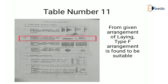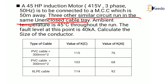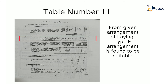First, we find the arrangement for the cable. From Table 11, we select a suitable arrangement of laying. Since three other similar circuits run in the same unenclosed cable tray, we match this with the table. There are arrangements A, B, C, D, E, F, G and so on. Based on our requirement, the Type F arrangement is found to be suitable.